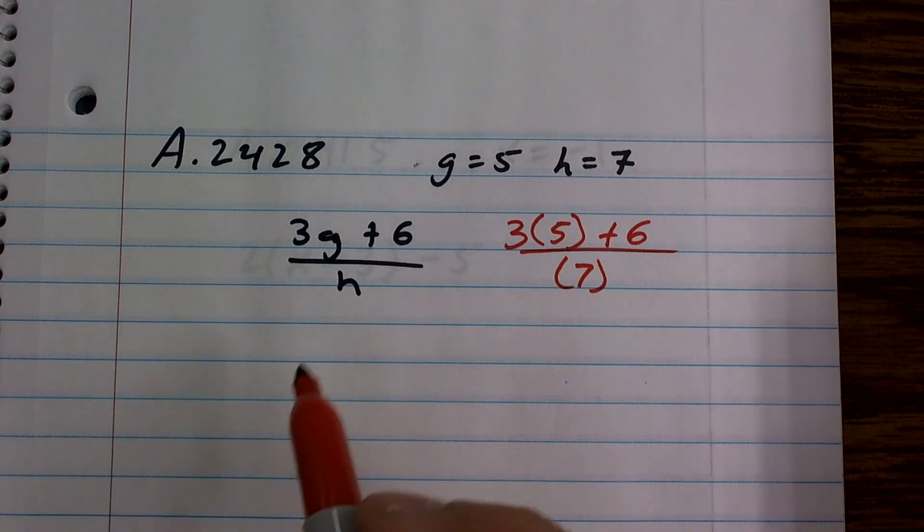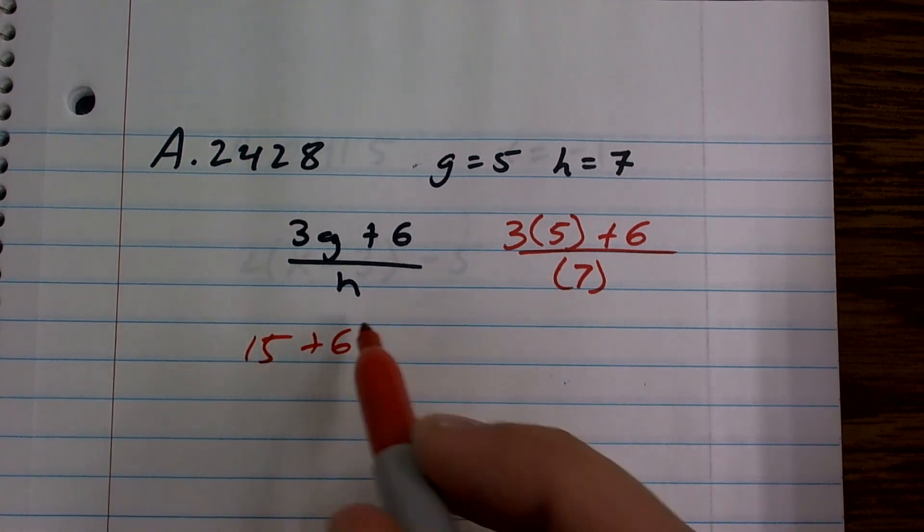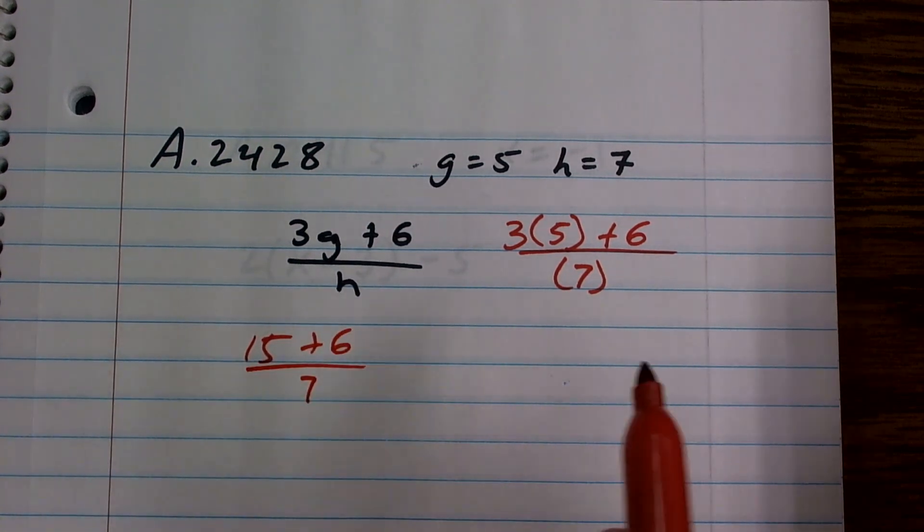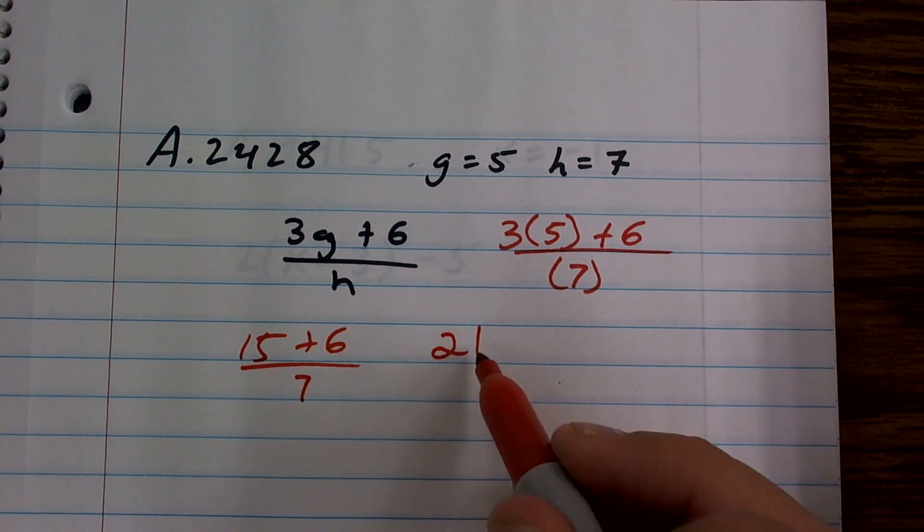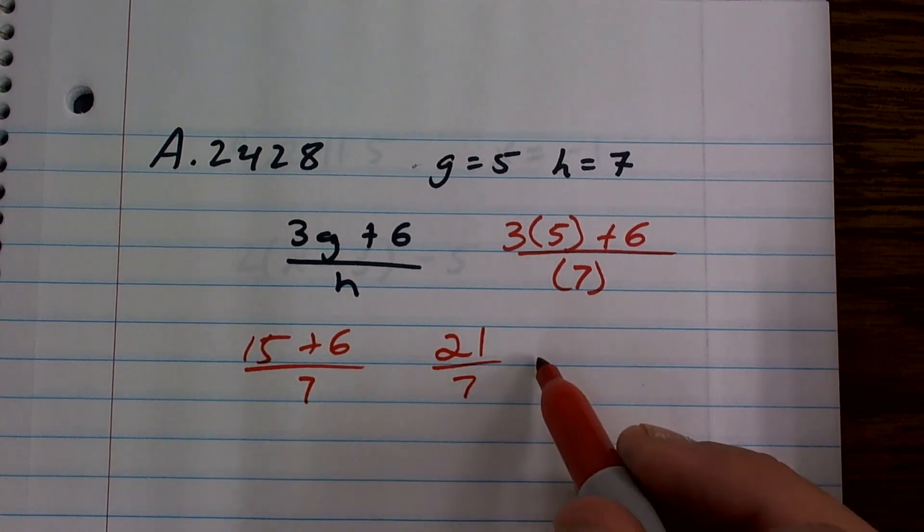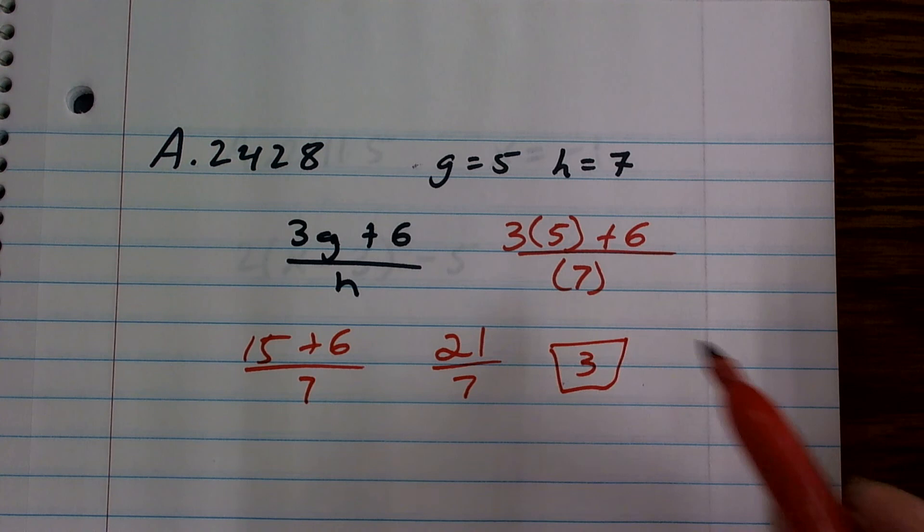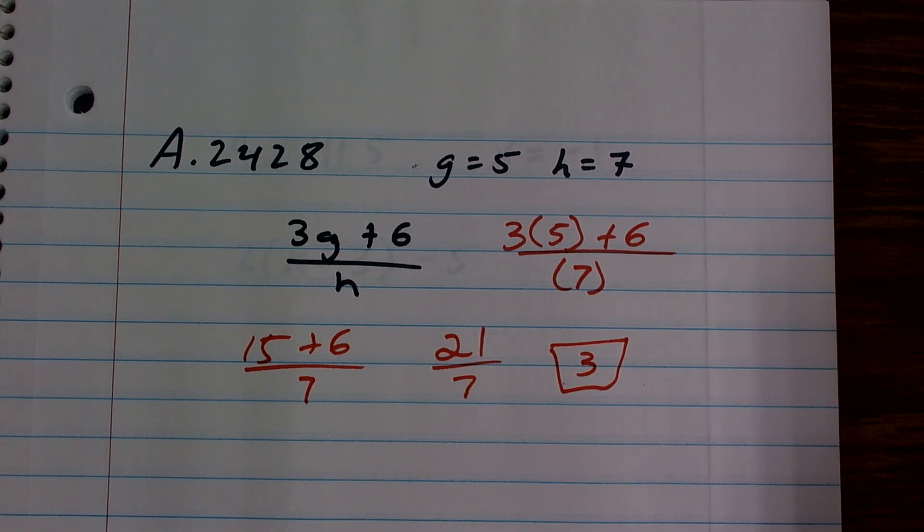3 times 5 is going to give me 15 plus 6 divided by 7. 15 plus 6 is 21 divided by 7 equals 3. And there's my horrible español, but you can see that I have numero 3.